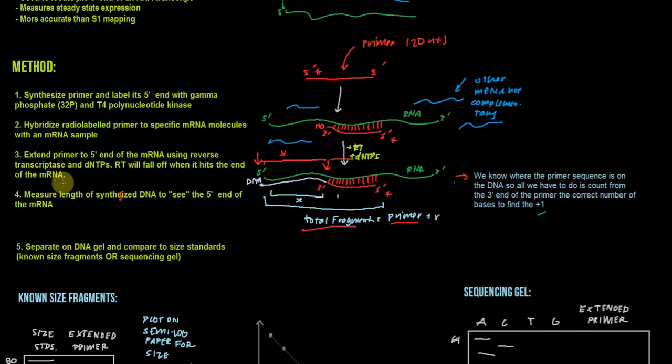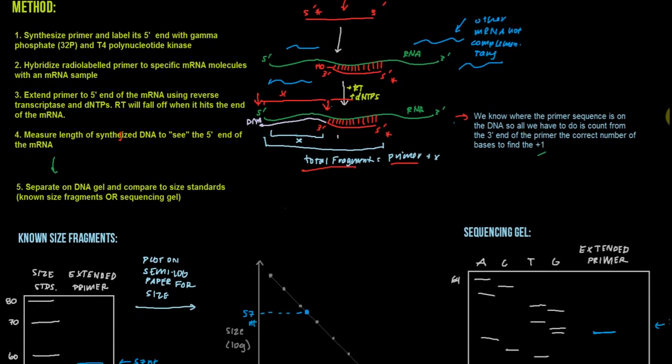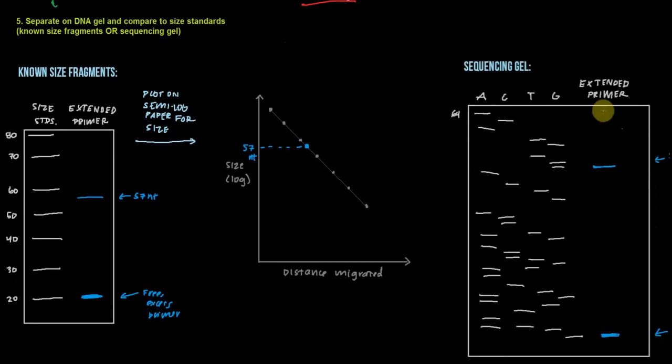So after we do this, we're going to measure the length of this synthesized DNA by separating it out on a DNA gel and comparing to size standards. And there are two different ways that we can do this. In both cases we're going to run a gel and compare to size standards, but in one case the size standards are going to be known size fragments, and in the other case we're going to do a sequencing gel. Let's take a look at known size fragments first.